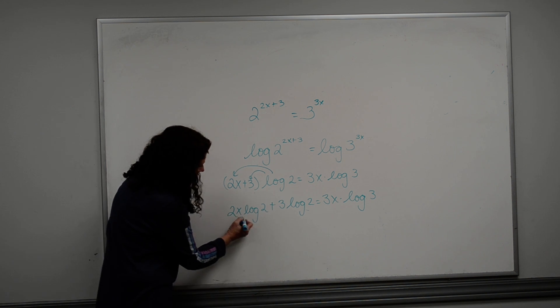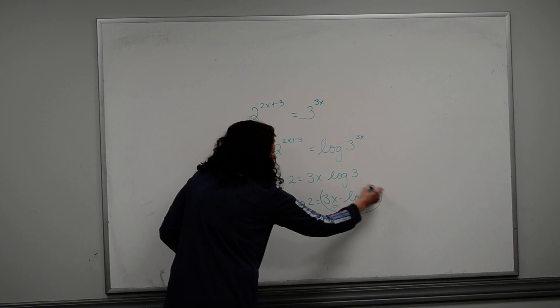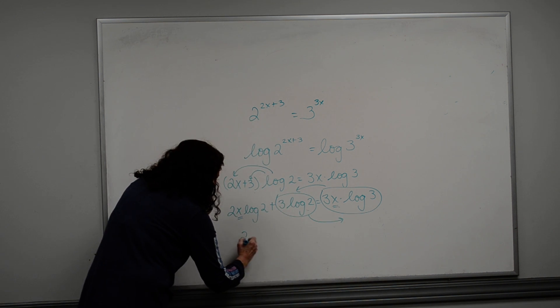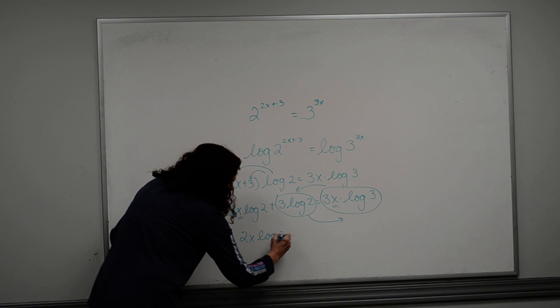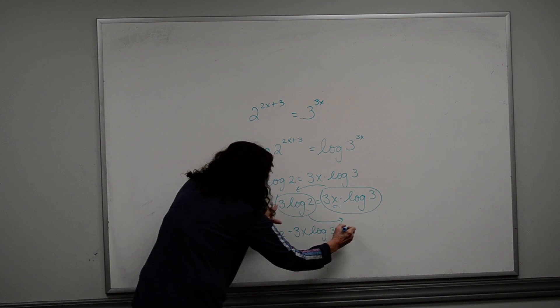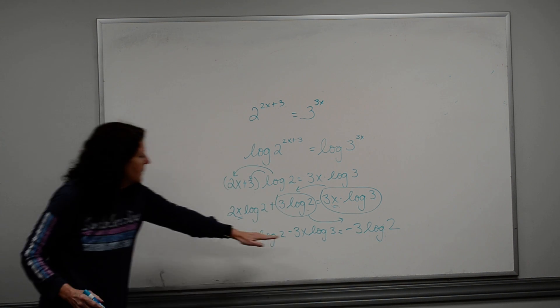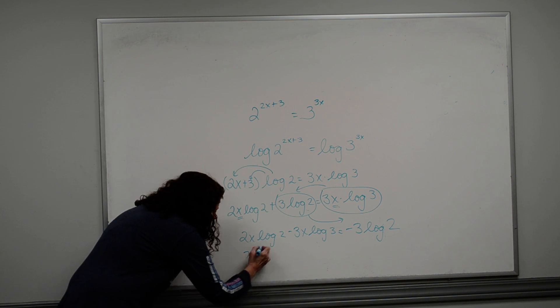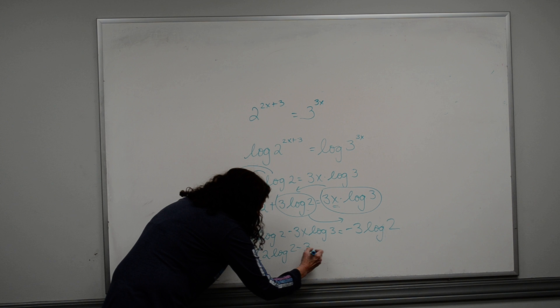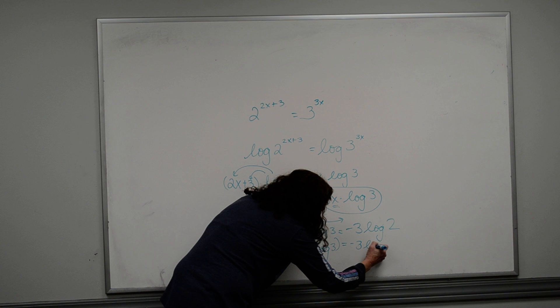I need my values, I've got an x here, I've got an x here, they have to be on the same side. So I'm going to bring this one over and I'm going to take this one to the other side. So I have a 2x times the log of 2 minus 3x times the log of 3 is equal to a negative 3 times the log of 2. I'm going to factor out an x here, so I have 2 times the log of 2 minus 3 times the log of 3 equals negative 3 times the log of 2.